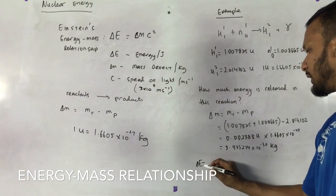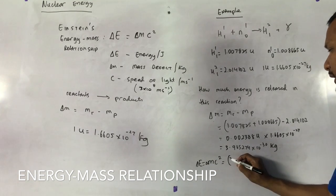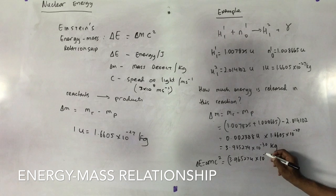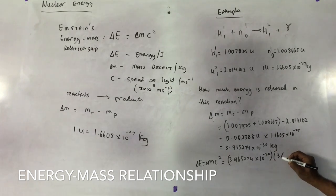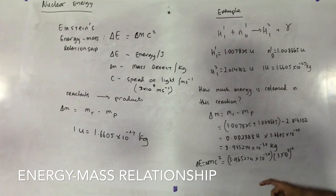So therefore, the change in E is equal to MC squared, which is this value here, 3.965274 by 10 to the minus 30 by 3 by 10 to the eighth squared. The number one mistake, y'all, in doing these questions is forgetting the square. Please remember to square it.